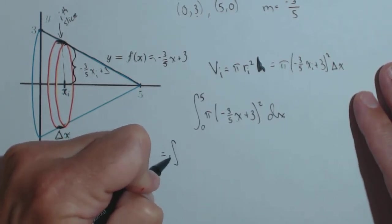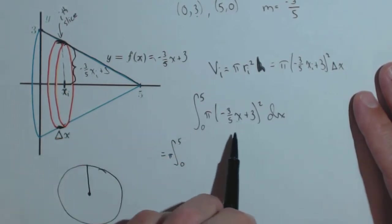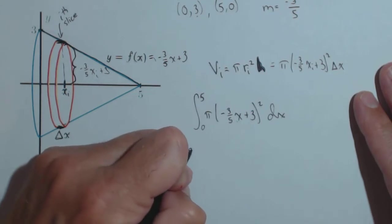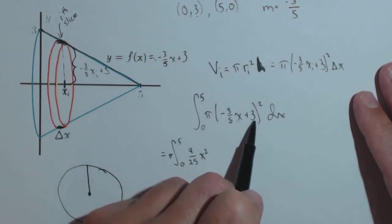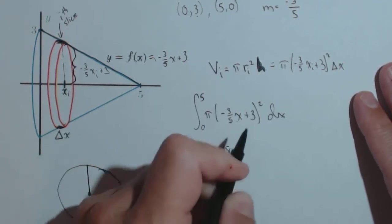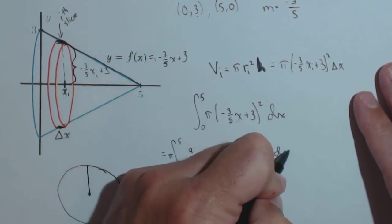So, let's do that real quick. I'm going to pull the π out and save it for the end. I do need to square this. This needs to be foiled out. -3/5 times -3/5 is 9/25 x². -3/5 times 3 is -9/5. And remember, we're going to have two of those. So, -18/5 x + 9 dx.